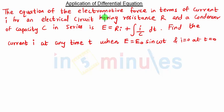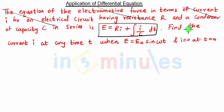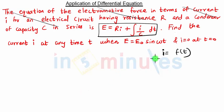The equation of the electromotive force in terms of current I for an electrical circuit having resistance R and capacitance C in series is given. All the other things are irrelevant to us — we only need this equation. The hint is to find the current I, so we need to find current I as some function of T.